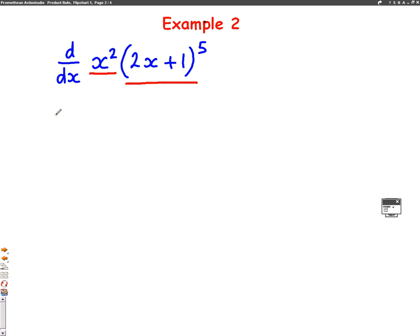We call one of them u. Let's let x squared be u. And one of them is v. We'll let 2x plus 1 to the power of 5 be v. We need to work out u dash. u dash, when you differentiate the x squared, you get 2x.